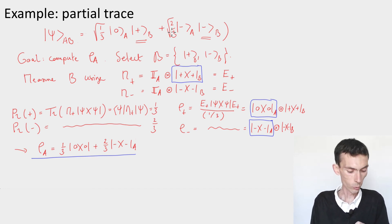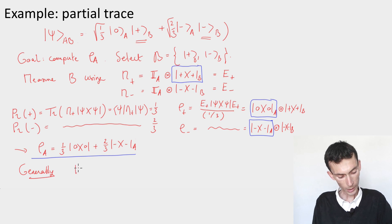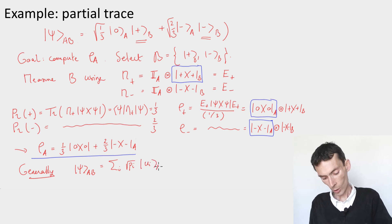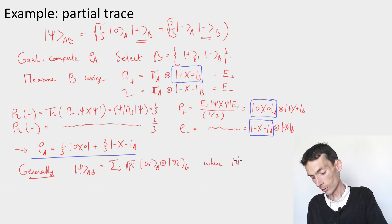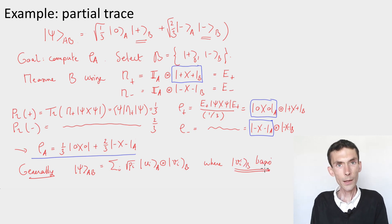and this happened with probability two-thirds. So this is a general rule. In general, if you're able to write your state psi AB in the form sum over i of root pi ui tensored vi, in that form, where the uis are anything, the root pi's are anything, but the vi are a basis for the B system, that is important, crucial condition, then in that case,